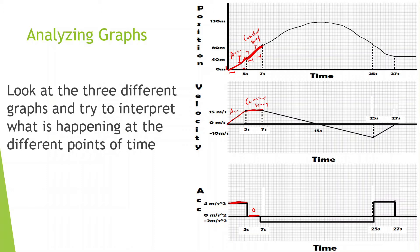Now we have this section where we're going up steeply, but then the curve starts to flatten out. When something is flattening out, that means it's pretty much staying at the same position for a certain amount of time. Let's say this is at 130 meters — it's staying at 130 meters for a good amount of time. So whenever you see something flattening out like this, that means it's slowing down.